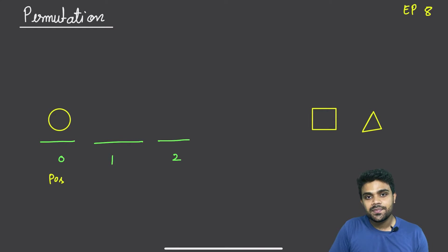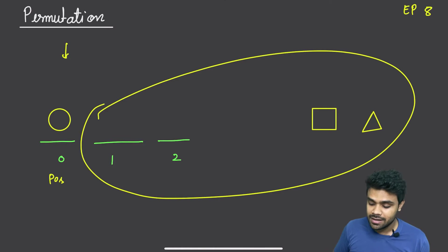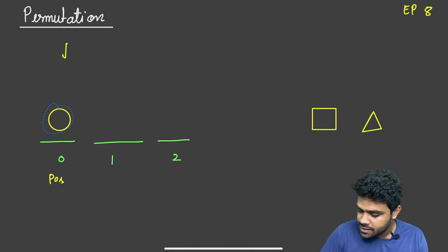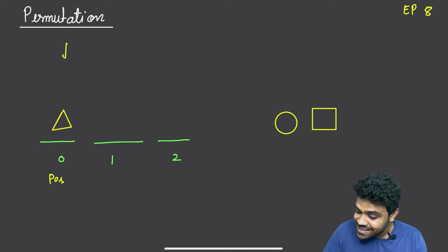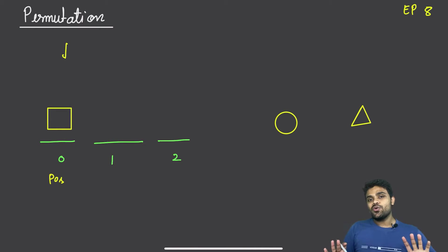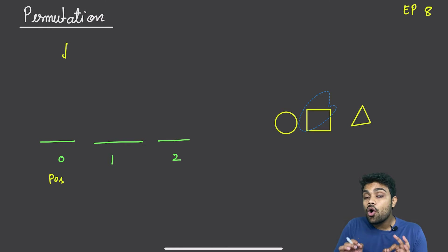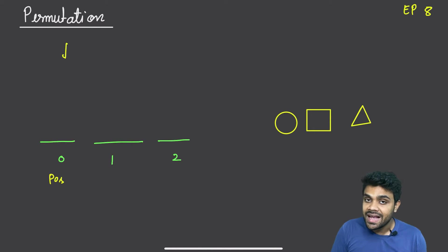Initially my position was zero and I was doing the task to put all elements one by one at position zero. Let's say I kept circle at position zero. Now I have triangle and square remaining and two places remaining, so I ask recursion to do the remaining task from position one. Next time I keep triangle, then I keep square — three possible options because there are three elements, and I try to pick all of them one by one at this position, asking recursion to do the remaining task.